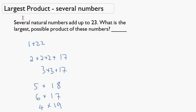Here is a problem where we actually are given several numbers that add up to a certain number, and we want to figure out what is the largest possible product of these numbers, but we don't know how many there are. There could be many different numbers. Here's an example. Several natural numbers add up to 23. What is the largest possible product of these numbers?